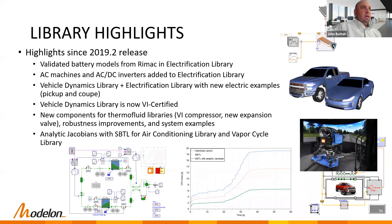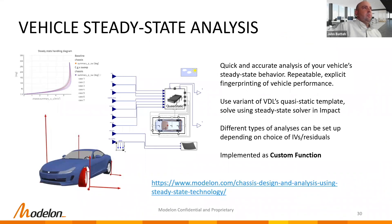Vehicle Dynamics Library is now VI-grade certified, meaning you can export your models into VI-grade simulation platforms. On the thermofluid side there have been many advancements: air conditioning, vapor cycle, liquid cooling, heat exchangers, new components, a vapor injection compressor for new applications, new expansion valves, robustness improvements, and new system examples like a heat pump. One major advancement is analytic Jacobians, which have enabled significant robustness and runtime improvements.